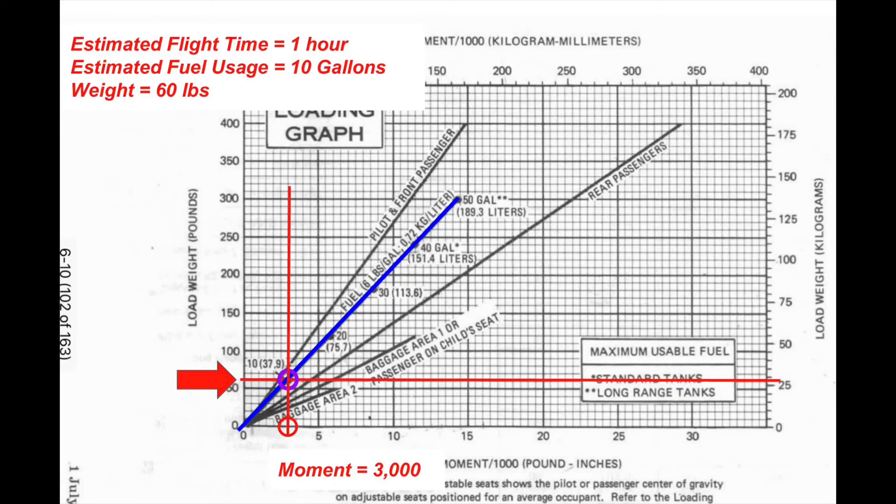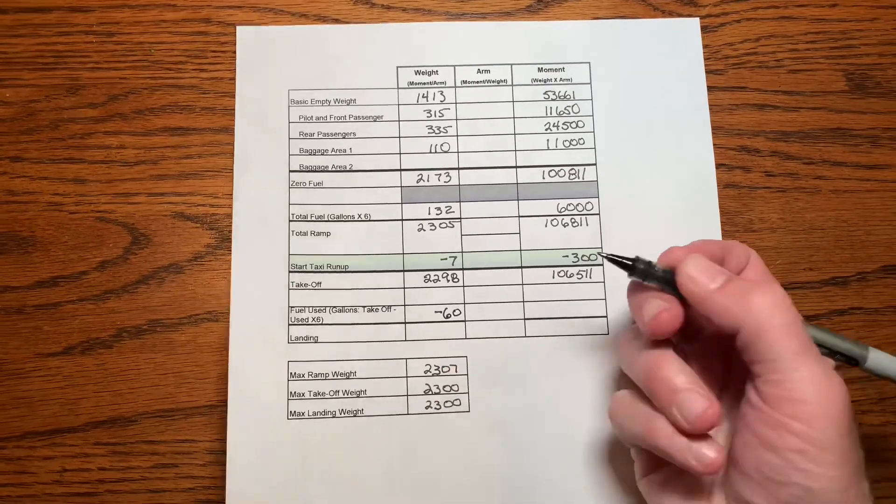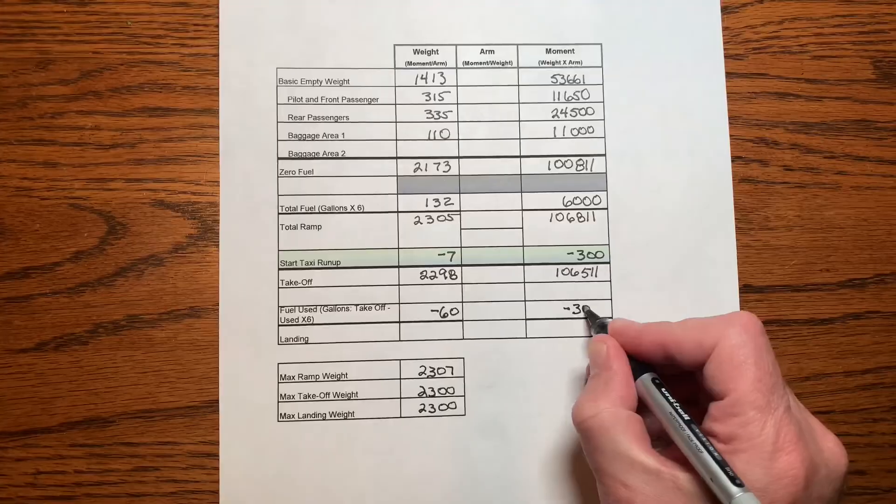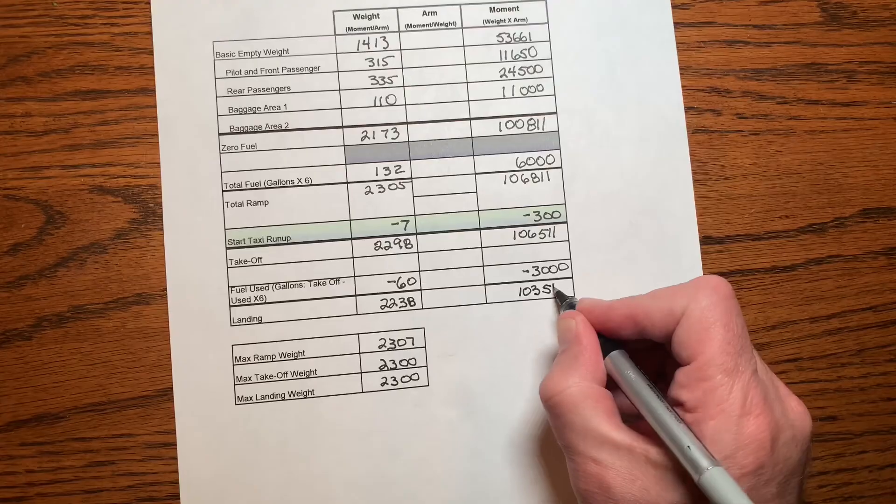We can now start our engines and head for that awesome barbecue. Now, here's the bonus question: will we still be within our weight and balance envelope when we land? Let's say the flight takes one hour and we burn 10 gallons of fuel. 10 times 6 equals 60 pounds of fuel. Look up the moment for that used fuel on the loading chart — it's 3,000 pound-inches. Subtract the fuel weight from the total takeoff weight: 2,298 minus 60 equals 2,238 pounds. Recalculate the total moment: 106,511 minus 3,000 equals 103,511 pound-inches.